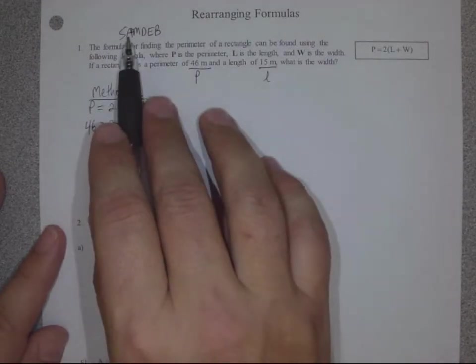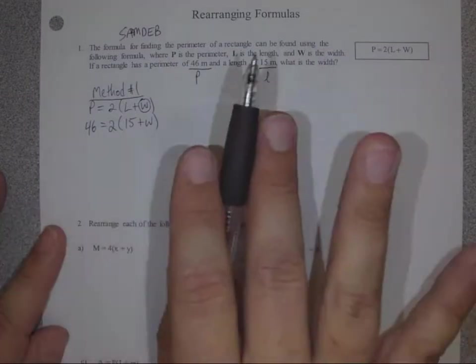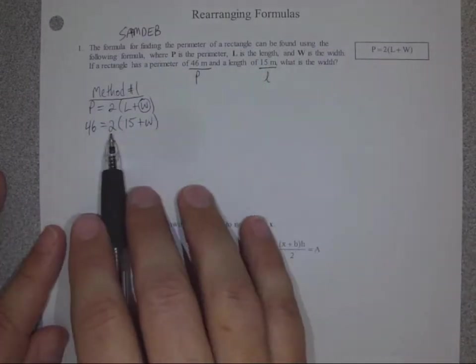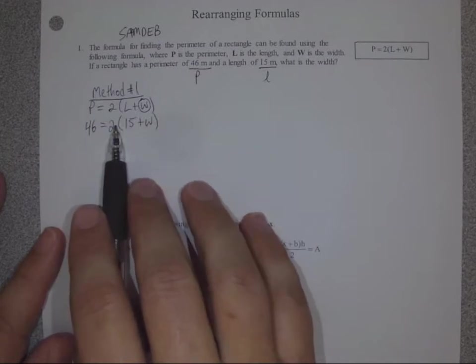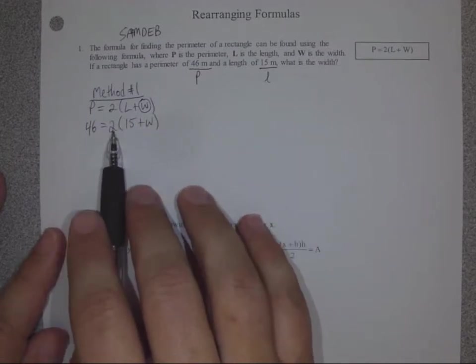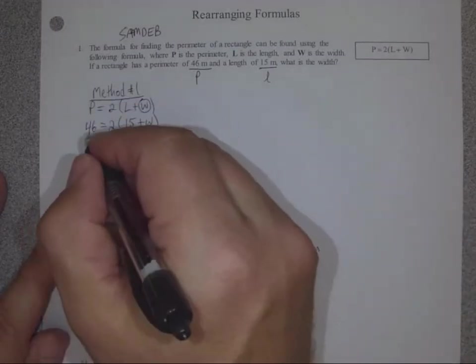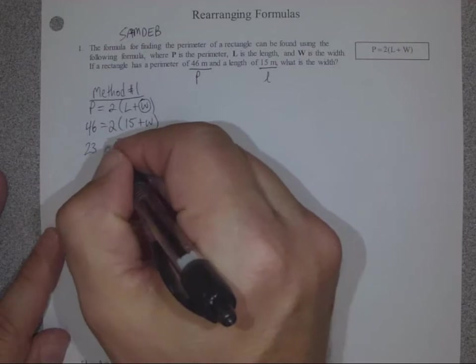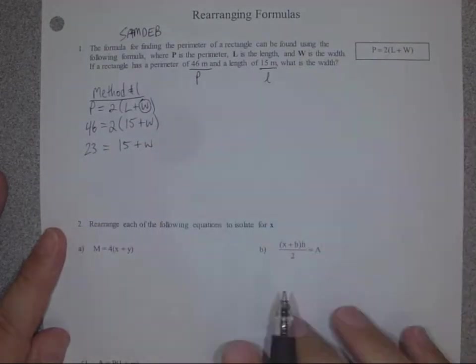Brackets, however, come last. So if I see a bracket, I'm not touching it to last thing. I see this 2, and 2 is being multiplied by W. I know that because there's no plus or minus here. If it's being multiplied by W, then the first thing we should do is divide both sides by 2. 46 divided by 2 is 23. 23 is equal to 15 plus W.